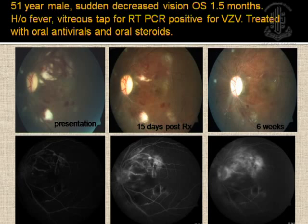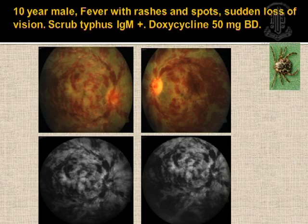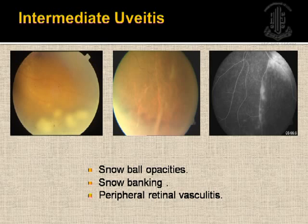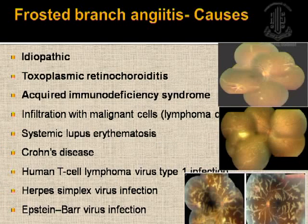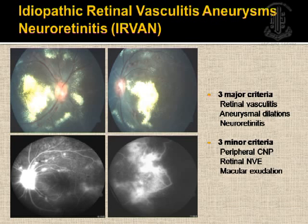Moving on to pan-uveitis presenting with hypopyon — the classical condition is Behcet's disease, which presents as recurrent painless white hypopyon, severe vitritis, occlusive arteritis or phlebitis or both, and retinitis. Most patients test positive for HLA-B51. We need to look for aphthae, genital ulcers, skin lesions, and history of recurrent ulcers. A diagnostic criteria was proposed in 1987 by the Research Committee of Japan, categorizing it as complete, incomplete, and possible. The International Study Group criteria include recurrent aphthous ulcers as a major criterion, and recurrent genital ulcerations, ocular inflammation, skin lesions, and positive pathergy test as minor criteria. Diagnosis is confirmed with one major and at least two minor criteria.